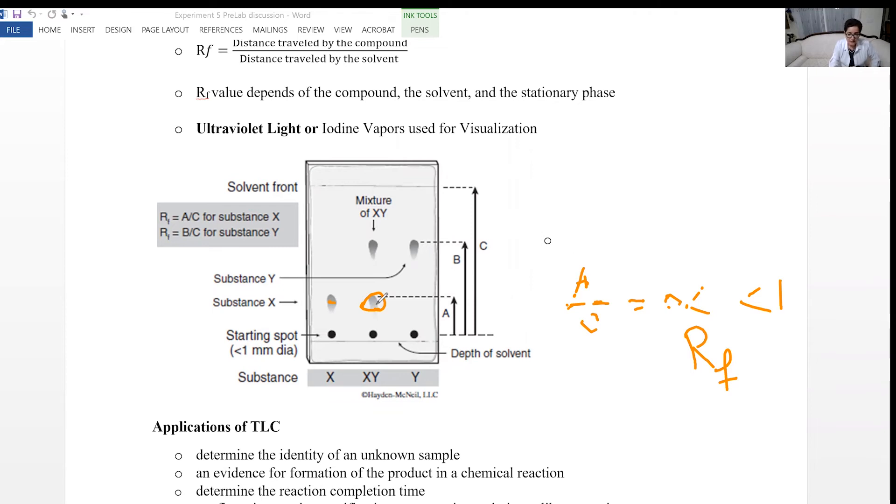And you notice here, we have one sample that shows two spots. If it shows two spots, that means it's a mixture. So it did separate over here. It's not always one pure compound.